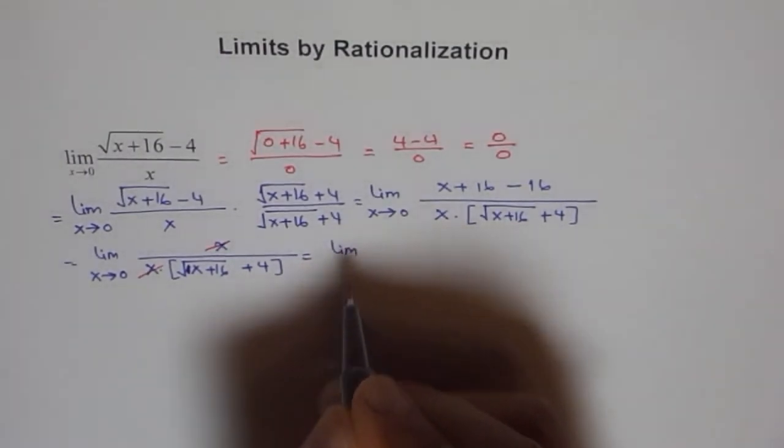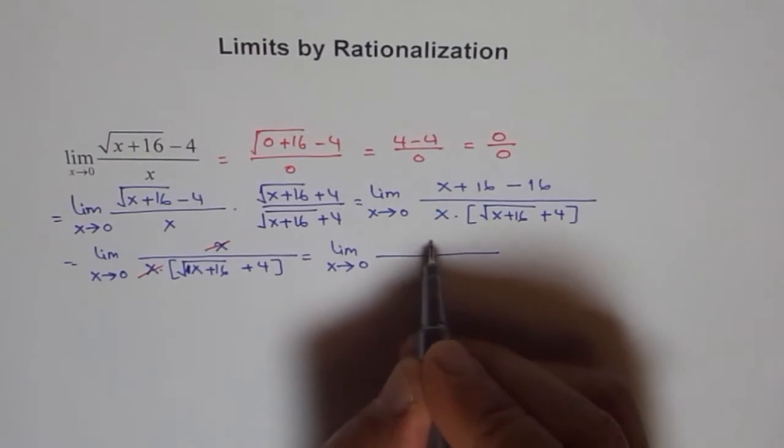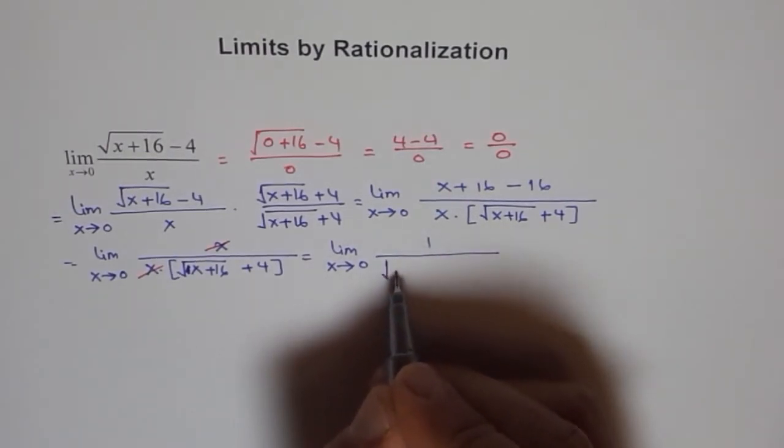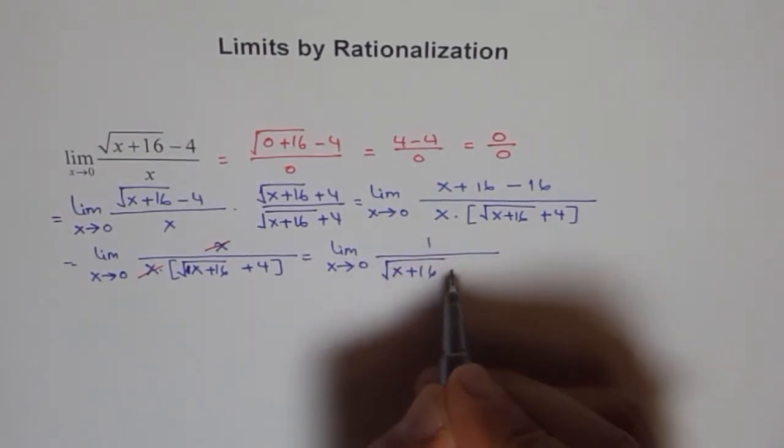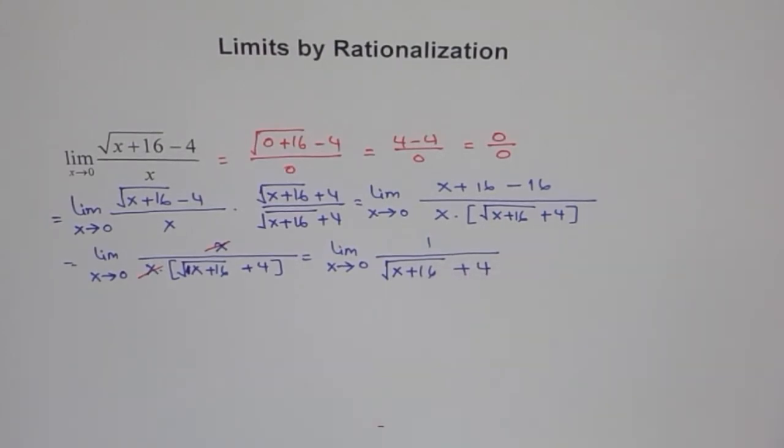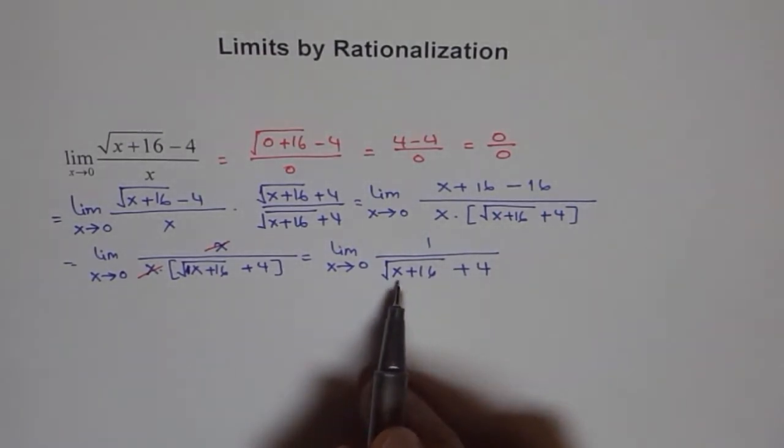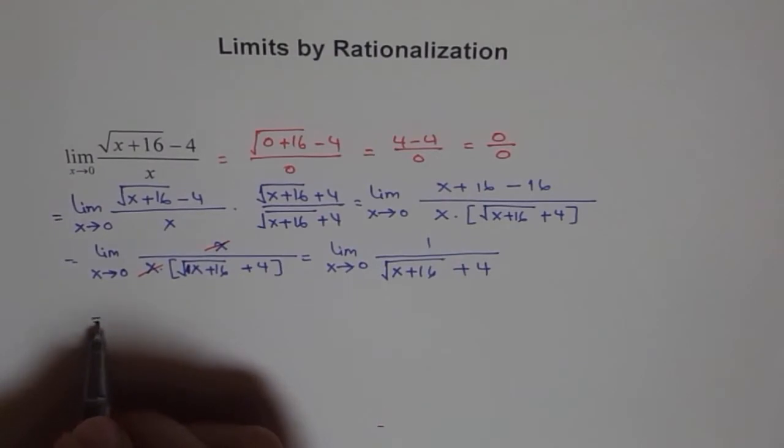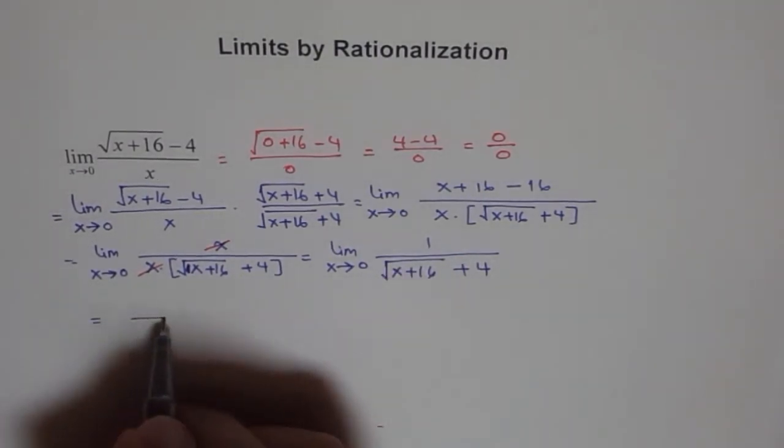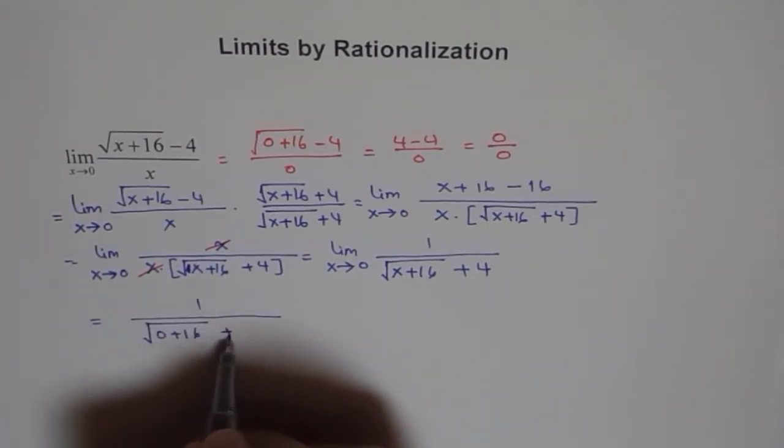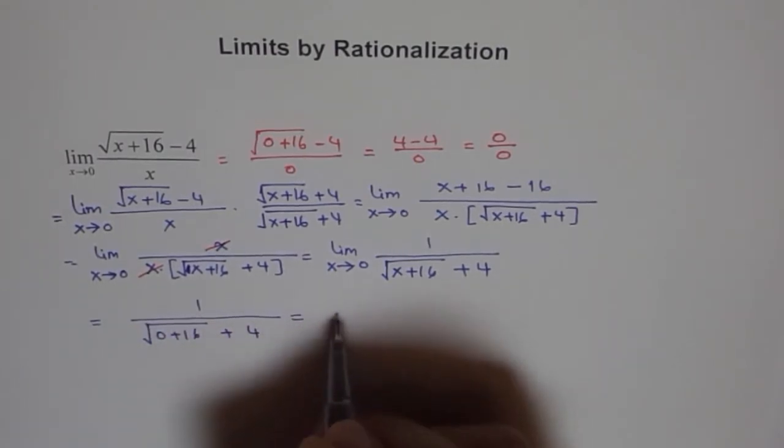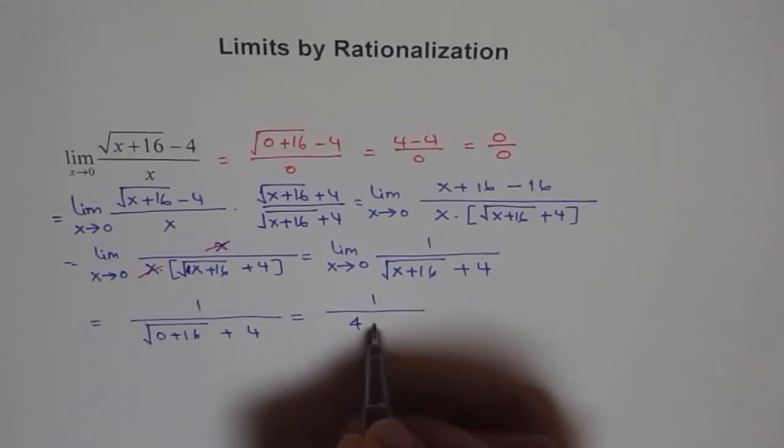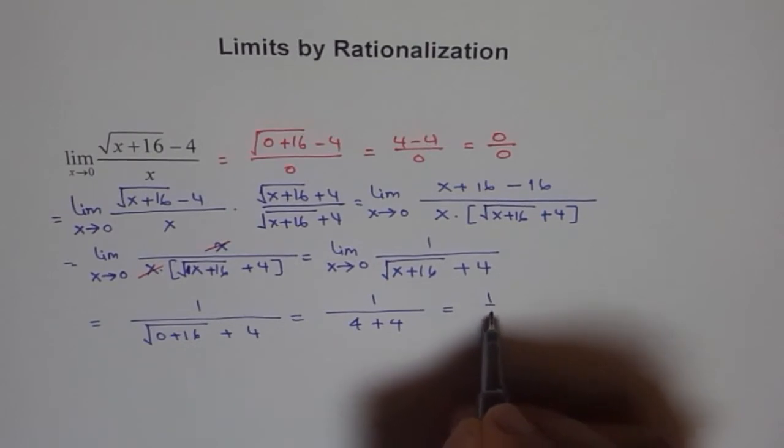And so, we get limit x approaches 0 and we get 1 over square root of x plus 16 plus 4. And now, we can always substitute 0 and get our answer. When I substitute 0 here, I get 1 over square root of 0 plus 16 plus 4, which is equal to 1 over square root of 16 plus 4, which is equal to 1 over 8.